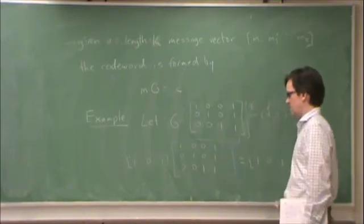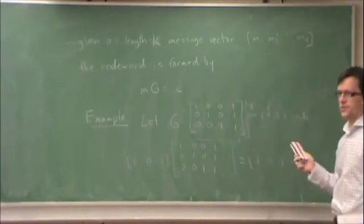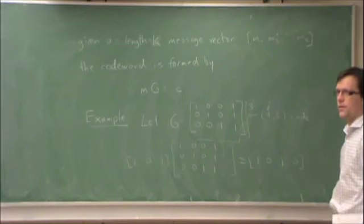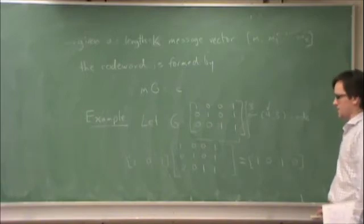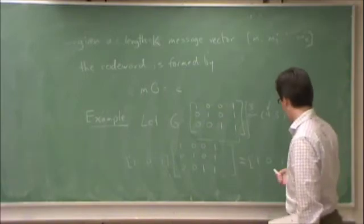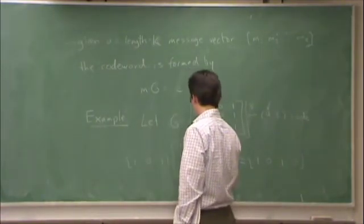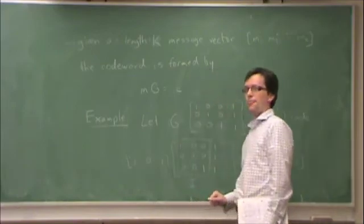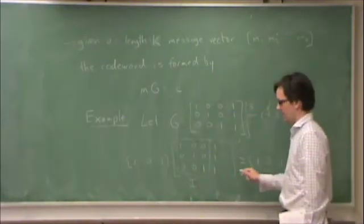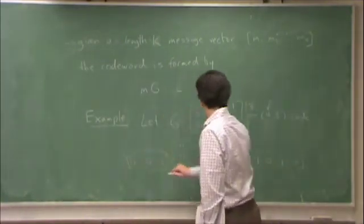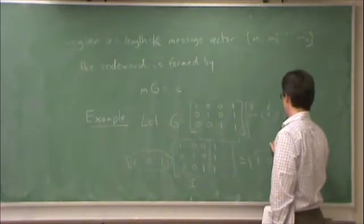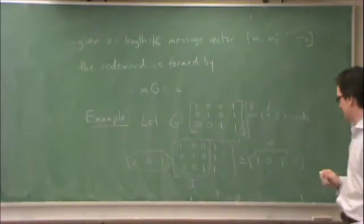Does anybody know what code this is implementing? A single bit parity check? A single bit parity check, exactly. So what we do, this you'll notice is the identity matrix. So in other words, whatever message is here will be repeated here. So those are the message bits.